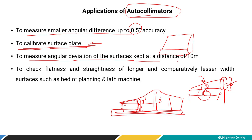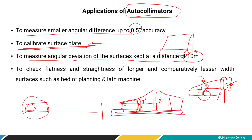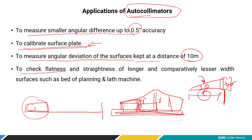The autocollimator can also measure the angular deviation of a surface kept at a distance of up to 10 meters. This is an advantage: the device is simple and portable — you can put it on a table, and even if the object is far away up to 10 meters, you can still take its measurement. It is also used to check flatness and straightness.